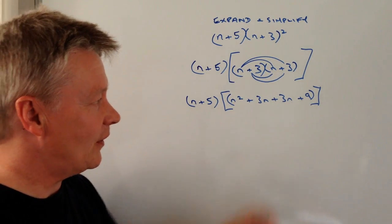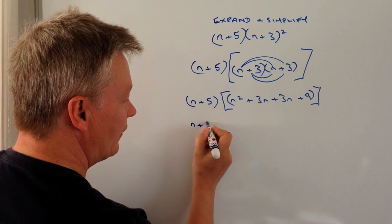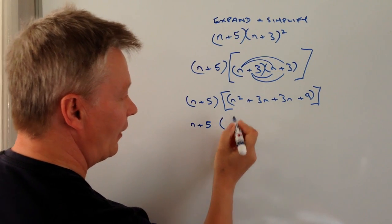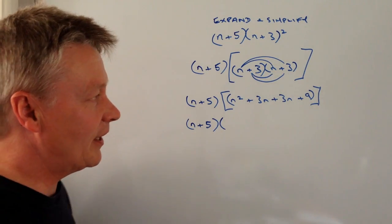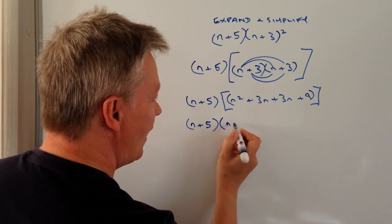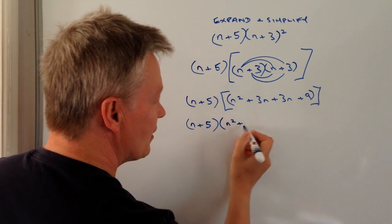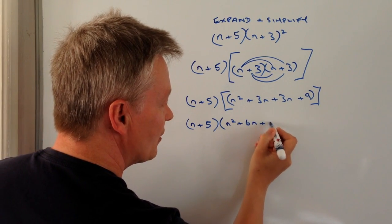So let's just finalize this a little bit. I've got n plus 5 and I'm going to multiply that. I'm going to revert now to just smaller normal curve brackets, gather up these like terms and I've got n squared plus 6n plus 9.